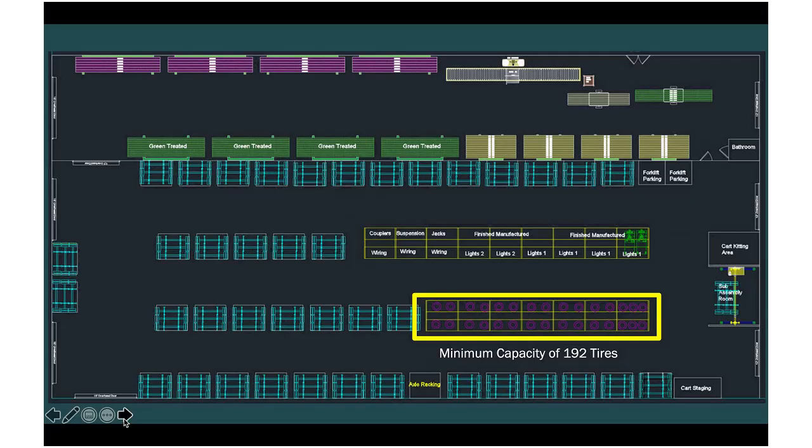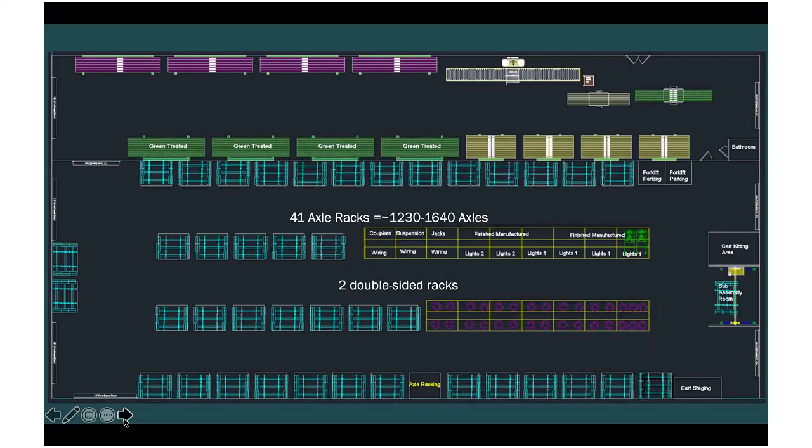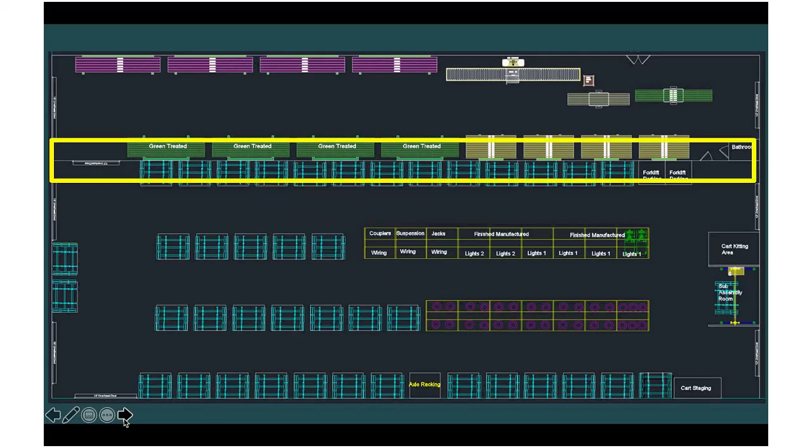In this drawing, we have 41 axle racks and two double-sided racks. The two double-sided racks you see have regular parts such as jacks, suspension, and our finished manufactured products, which are located in proximity to offices. The axles we assumed 30 to 40 per rack. It really depends on how many they're able to fit given the size of the axles.